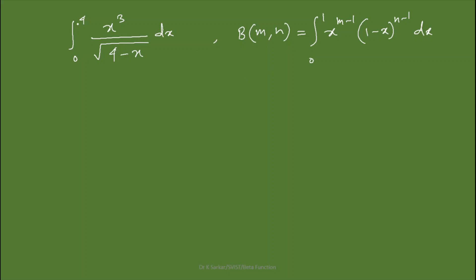Notice that the upper limit here is 4, whereas in the standard Beta function the upper limit is 1. If we take the denominator as the numerator, in our integral the factor is 4, but in the Beta function it is 1. So we need to make this 4 become 1. To do that, we take 4 as a common factor; the square root of 4 is 2, giving us 1 minus (x/4) dx.